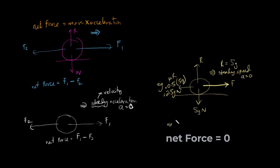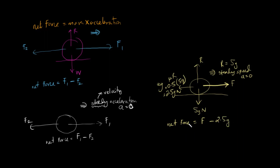In this case, the net force is F minus friction, which is mu R = 2.5G Newton. We know net force equals mass into acceleration — mass is 5 kg and acceleration is 0. That means F minus 2.5G Newton equals 0, therefore F equals 2.5G Newton.